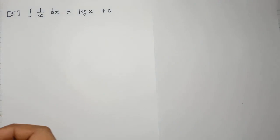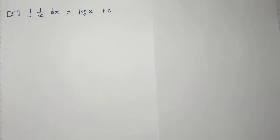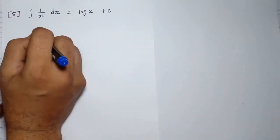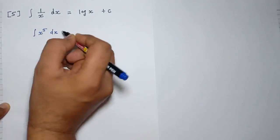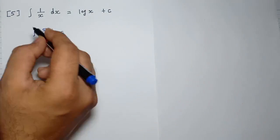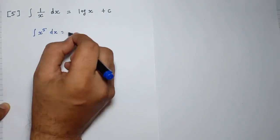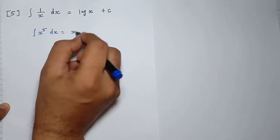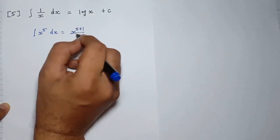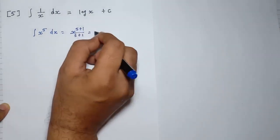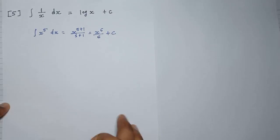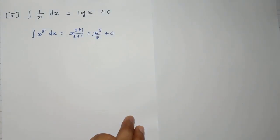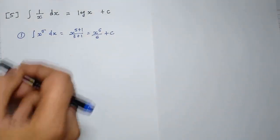Now remember one thing — we learnt the first rule. What is the first rule? If x raised to 5 is given, the first rule says its answer will be x raised to 5 plus 1 divided by 5 plus 1, so x raised to 6 divided by 6 plus c. That is the answer from the first rule.